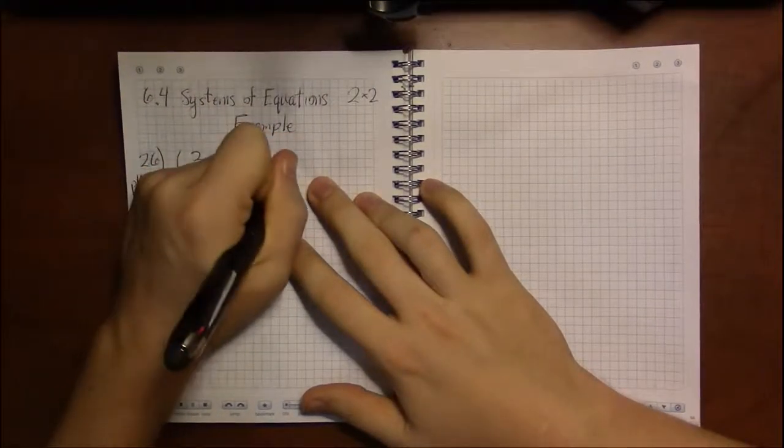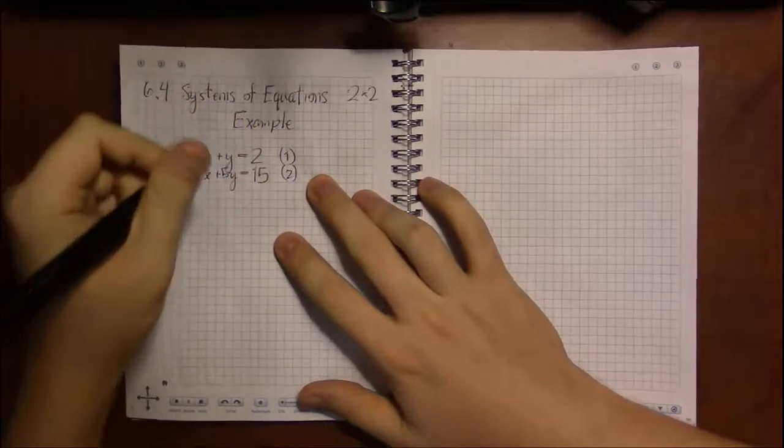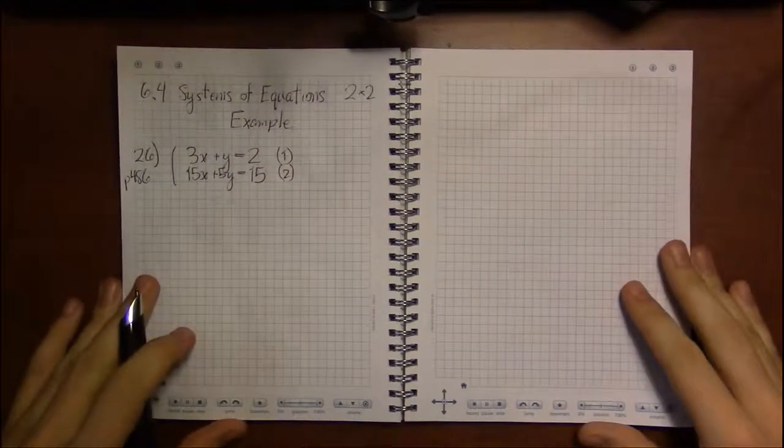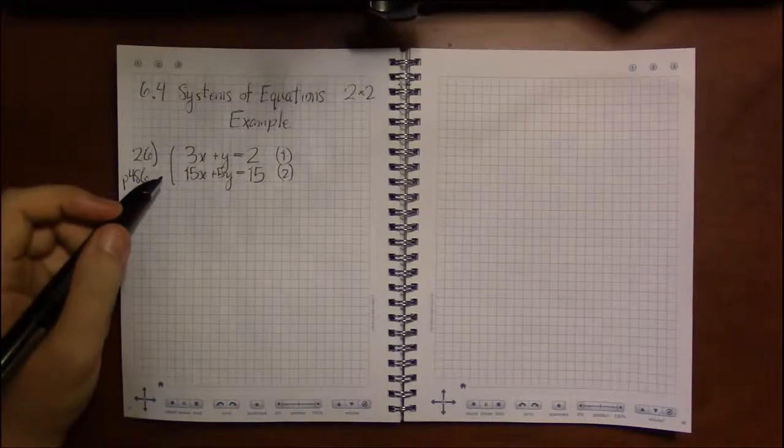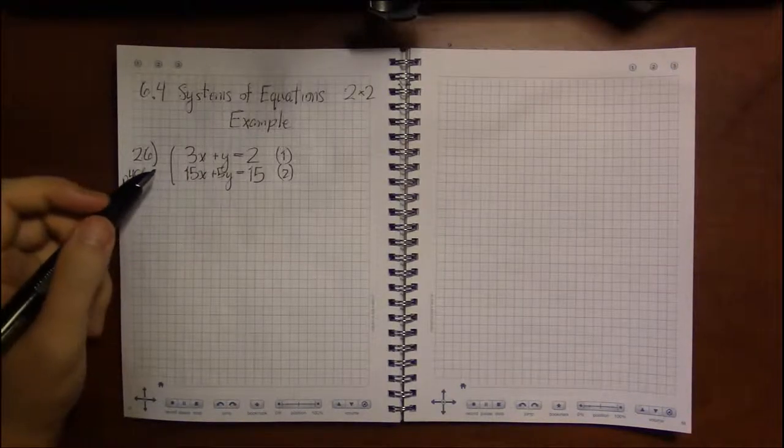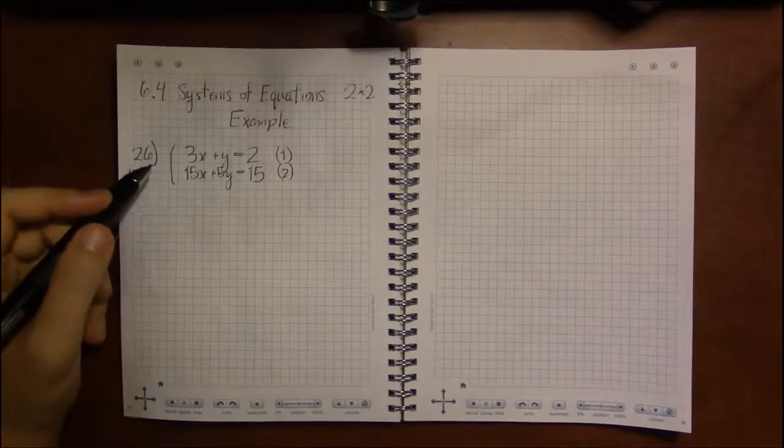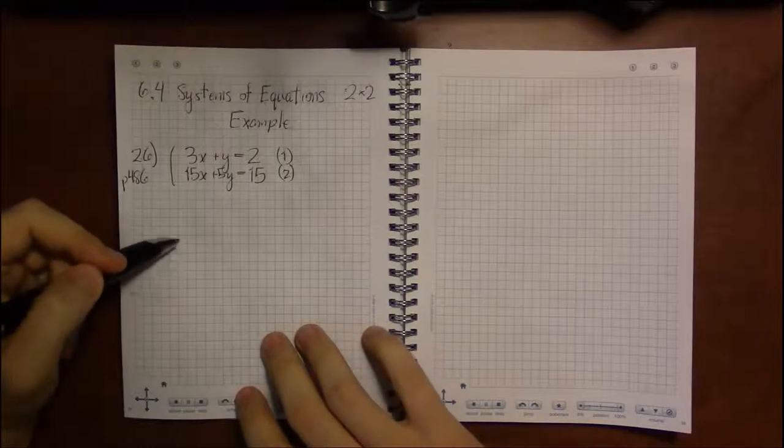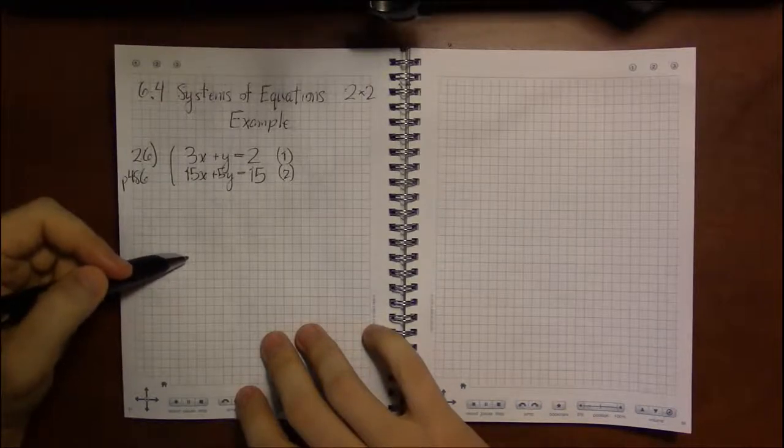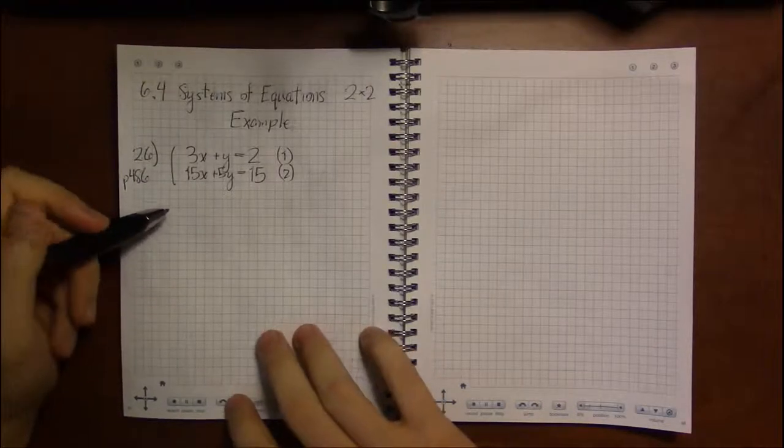So now we're going to look at inconsistent systems or systems of equations that have no solution. In this case there's no real preference whether we do substitution or elimination because once we reach our desired result everything is going to come to a screeching halt.